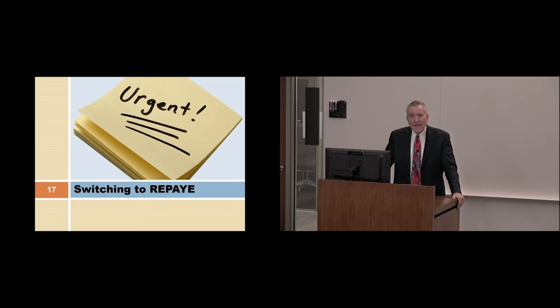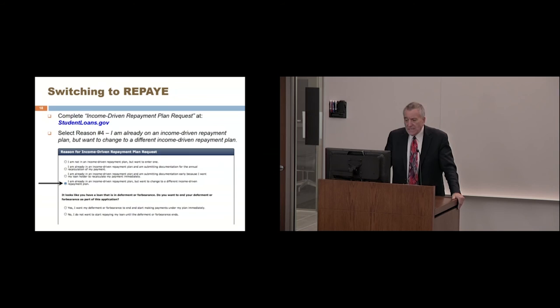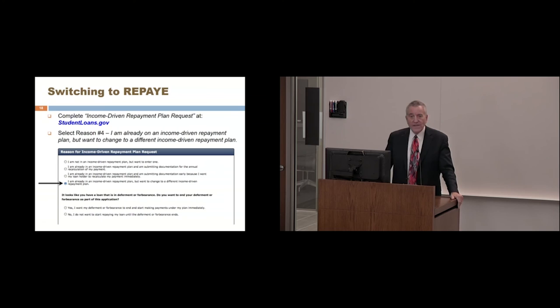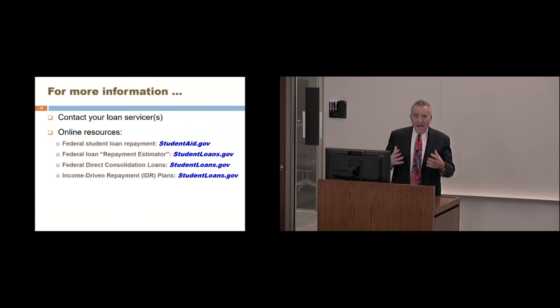For more information about consolidation, check out studentloans.gov. If you have loans currently on a different payment plan and want to switch them to REPAYE, complete the income-driven repayment plan request available at studentloans.gov. When asked for the reason you're submitting the request, select the option indicating you're already on an income-driven repayment plan but want to change to a different one. Your loan servicer — the company managing your loans — is the best source for information about changing plans; give them a call and they'll provide instructions and discuss the pros and cons.